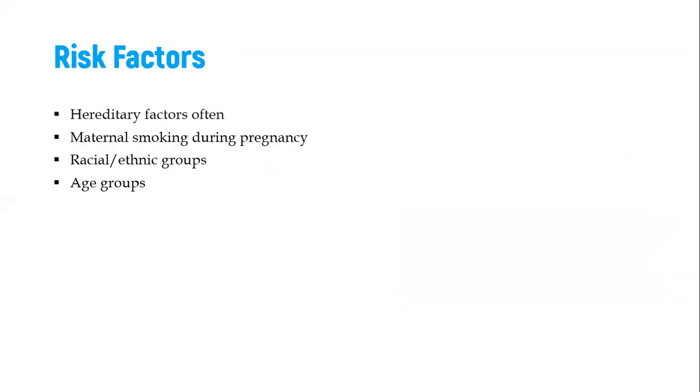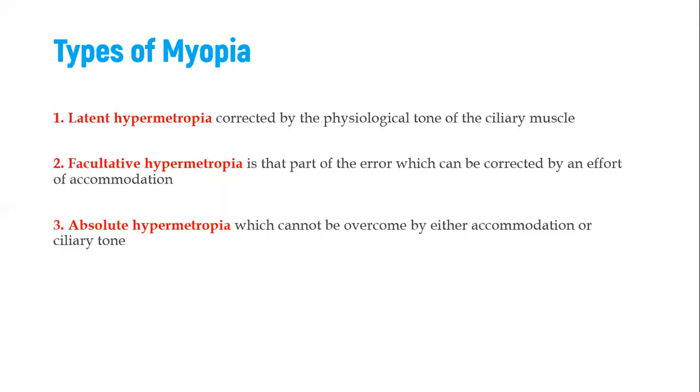So the people who are at risk of getting or having this problem: people within certain age groups and some racial or ethnic groups are at higher risk than others. Mothers who smoke during pregnancy and also hereditary factors are quite often linked. So if you're from a family that has a history of hyperopia, then there's a chance that the offspring will actually have the same condition.